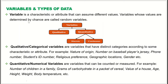Variables and types of data: a variable is a characteristic or attribute that can assume different values. If you are measuring temperature, temperature is a variable. If you are measuring height, your result will be five feet, six feet, and so on — height is a variable. Variables whose values are determined by chance are called random variables.